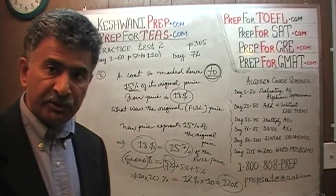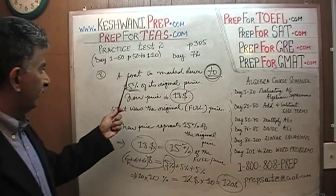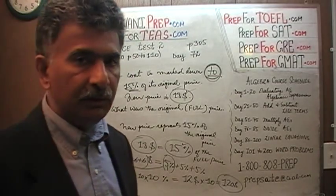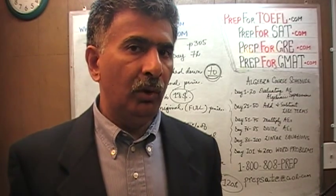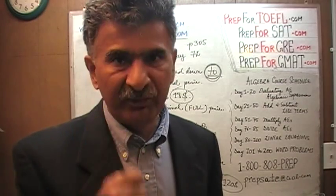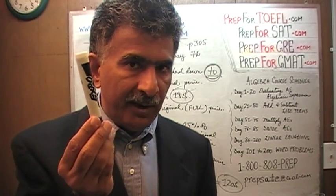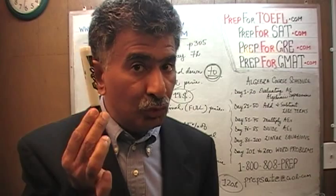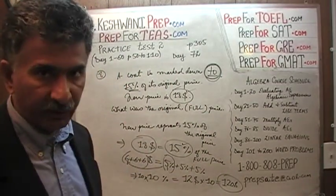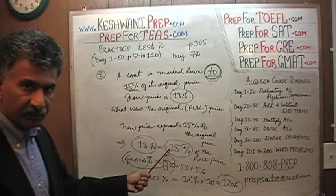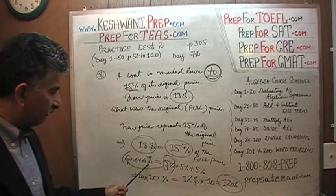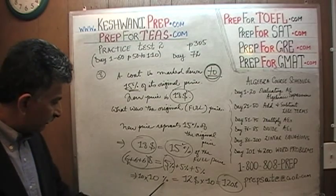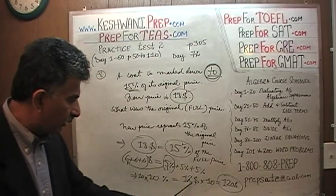Let's recapitulate. A coat is marked down to 15 percent of its original price — not by 15 percent, but to 15 percent. If the original was $100, now it sells for $1 if marked down to 1 percent. Here it's marked down to 15 percent, so the new price of $18 represents 15 percent of the original. 18 is 6 plus 6 plus 6, and 15 percent is 5 plus 5 plus 5, so 5 percent equals $6, 10 percent equals $12, and 100 percent equals $120. That's all.